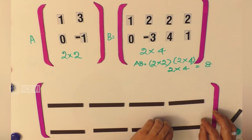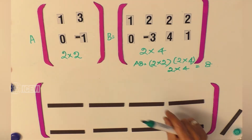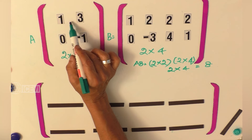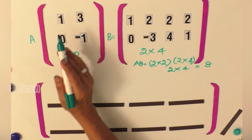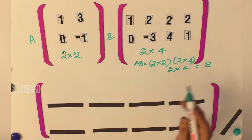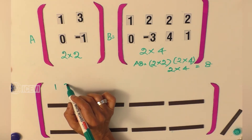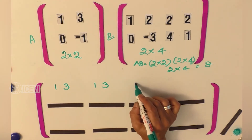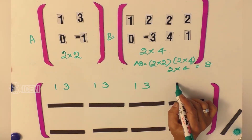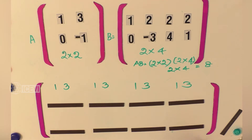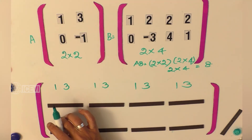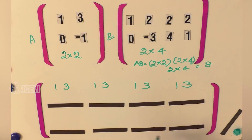Now let us go for the shortcut. We place the values of the first row of matrix A into the first row of the resultant matrix — putting 1, 3 in the first, second, third, and fourth element places. Similarly, we take the second row of matrix A and put it across the four element places of the second row.